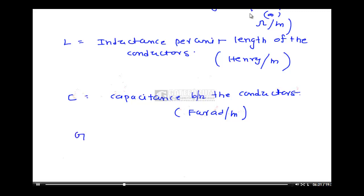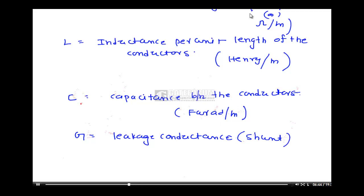Because current is leaking — some current is flowing — you can expect an element with some conductance value. That is indicated by G. So G is nothing but shunt or leakage conductance. We can also call it shunt conductance, and C can be called shunt capacitance. That is why C and G are shunt elements. Both C and G are also per unit length. C is capacitance between the conductors per unit length, and G is leakage conductance per unit length. The unit of G is mho per meter, or siemens per meter.